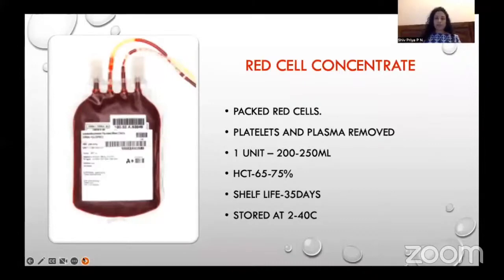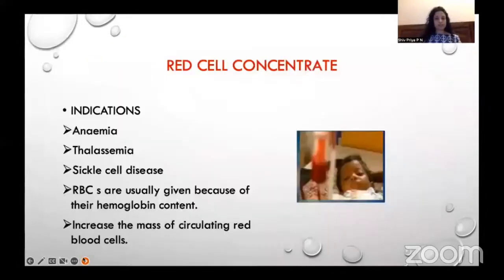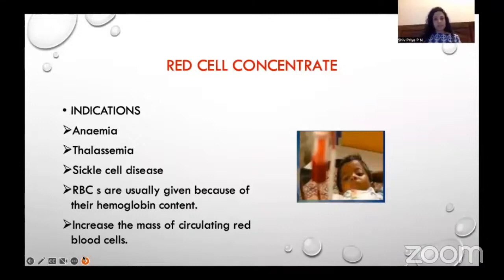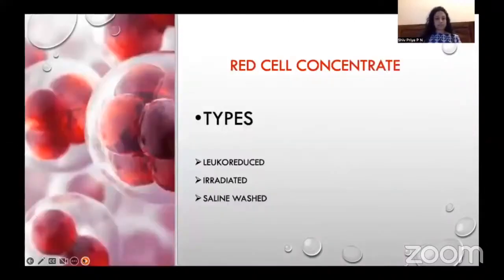Red cell concentrate is the most commonly used blood product during operations and in ICUs. Also called packed red cells, platelets and plasma have been removed. One unit contains 200 to 250 ml of volume with a hematocrit of 65 to 75%. Shelf life is 35 days and it is stored at 2 to 4 degrees centigrade. Red cells are mainly given for their oxygen-carrying capacity to increase hemoglobin concentration. It is used in anemia, thalassemia, and sickle cell disease. Various types available are leukoreduced red cell concentrate, irradiated, and saline washed.